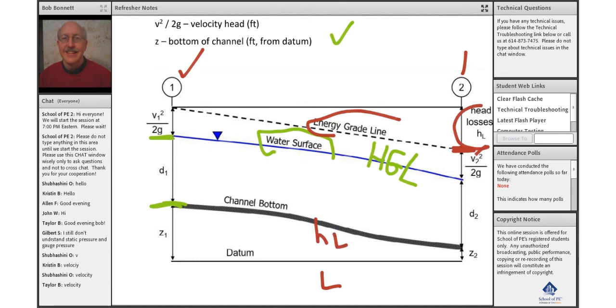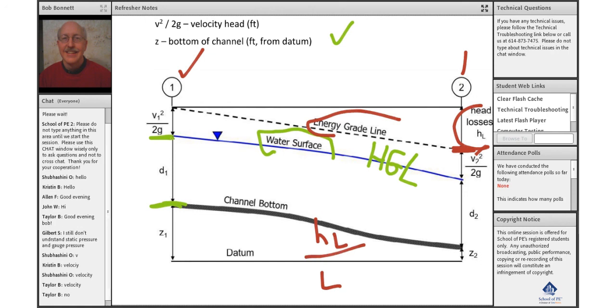divided by L, would be our slope of that energy grade line. Any questions on that?